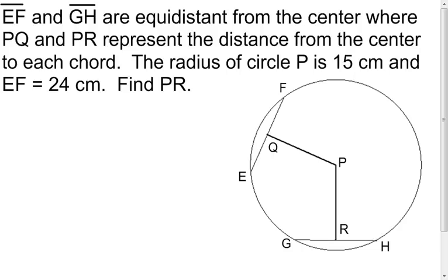So the first thing we want to look at here is, it tells us that segment EF and segment GH are equidistant from the center. I'm going to start with that piece of information right there.